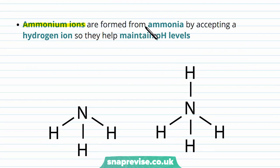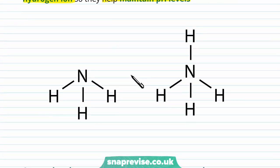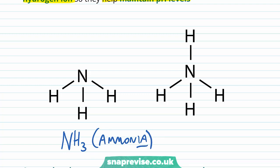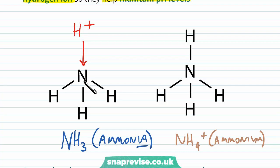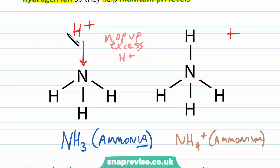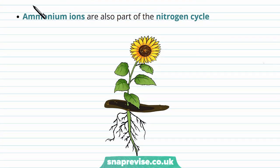The ammonium ion itself is formed from ammonia, which is slightly different. Ammonia accepts a hydrogen ion in order to form ammonium, and this helps to maintain pH levels. The formula of ammonia is NH3, whereas the formula of ammonium is NH4+. In forming ammonium, the ammonia takes a hydrogen ion and adds it to the nitrogen to get that fourth hydrogen. Because the hydrogen ion has a positive charge, ammonium has a positive charge too. In doing this, we can use ammonia to mop up any excess hydrogen ions — so if the pH of the blood is dropping, i.e. the hydrogen ions are going up, we can use ammonia to act as a buffer to take up hydrogen ions and keep the pH at a suitable level, forming NH4+. Ammonium ions are also very important as part of the nitrogen cycle, which plants rely on for a source of nitrogen.